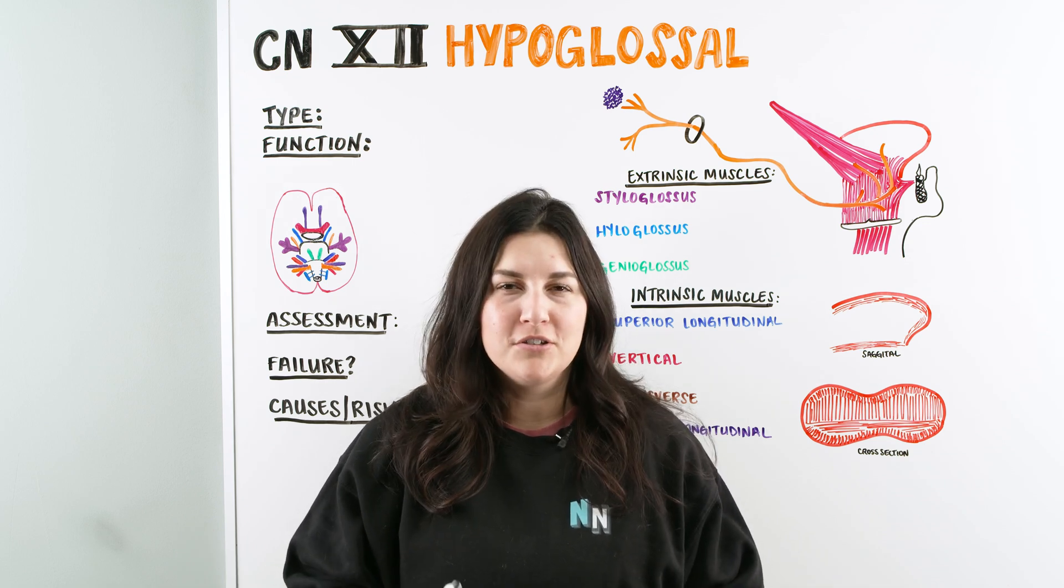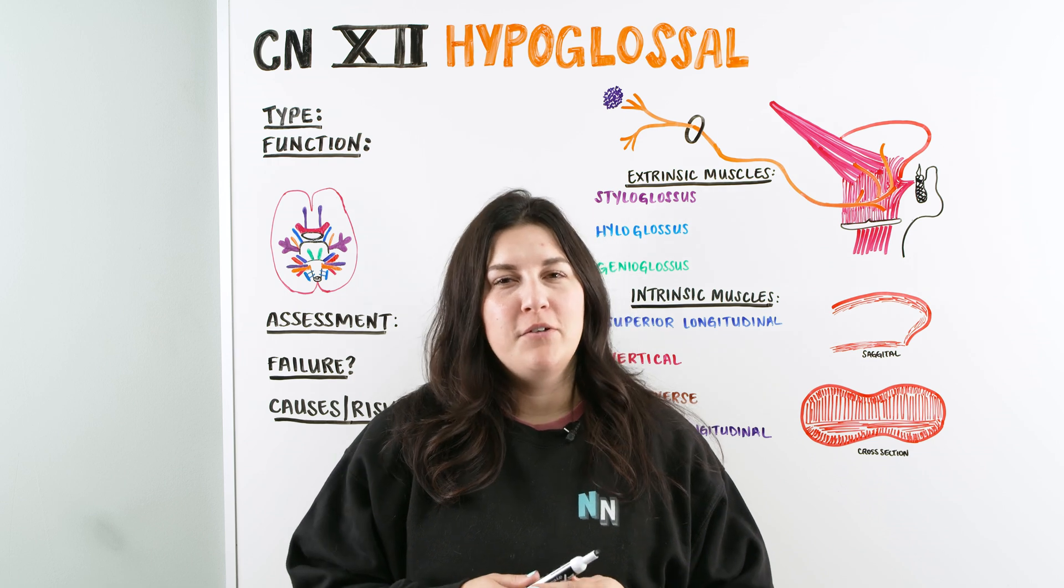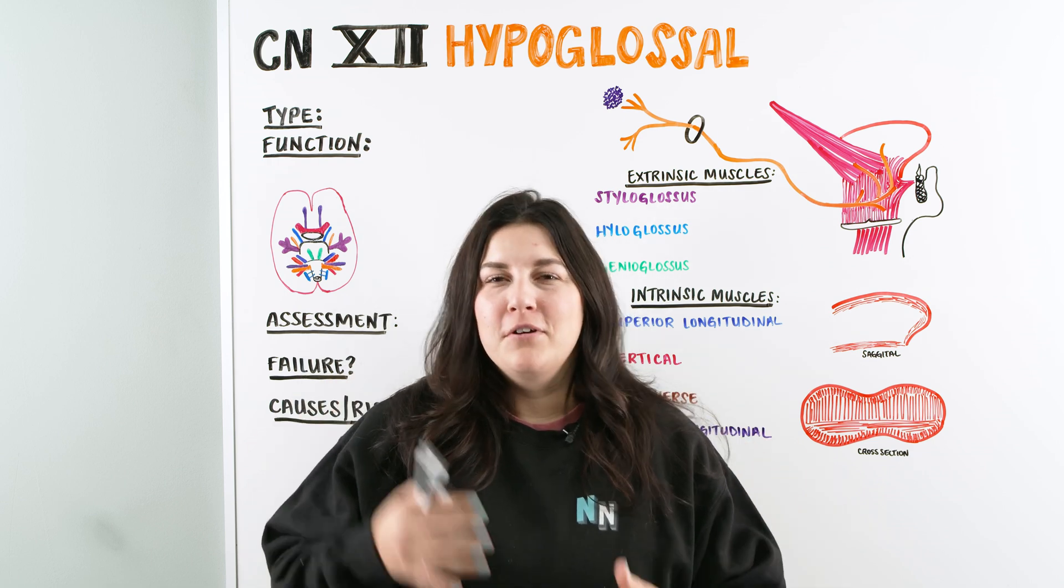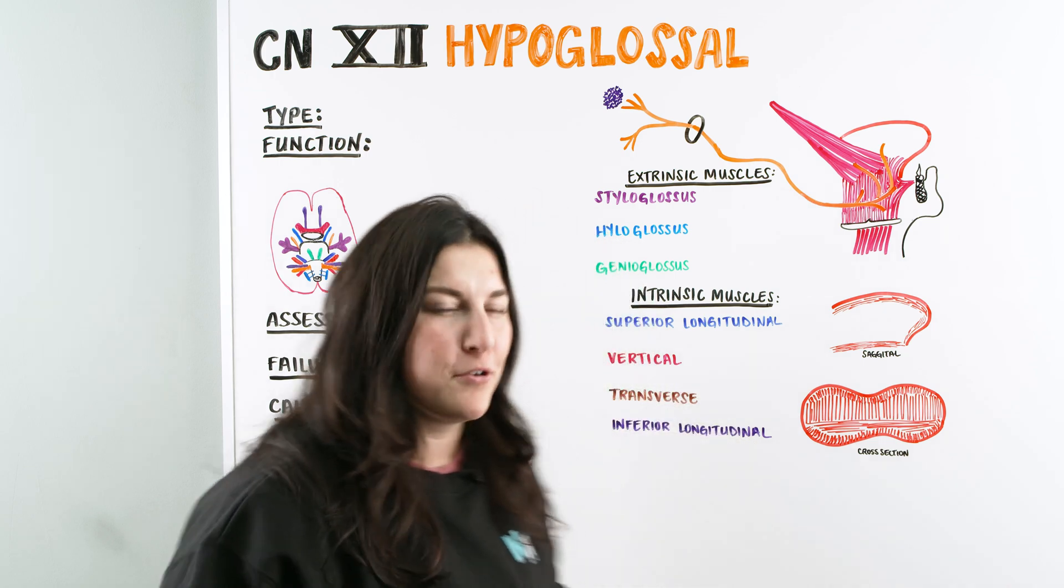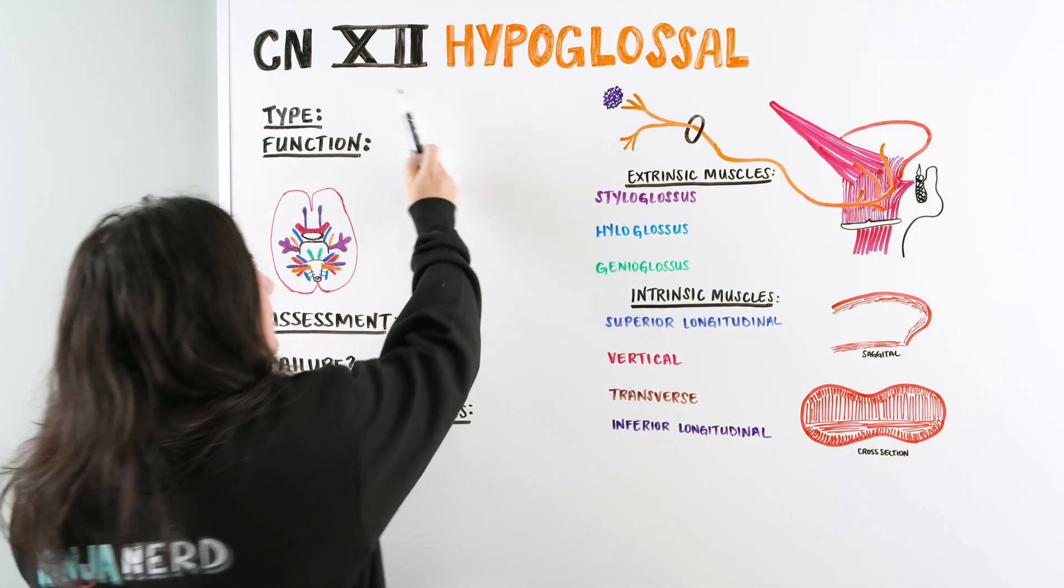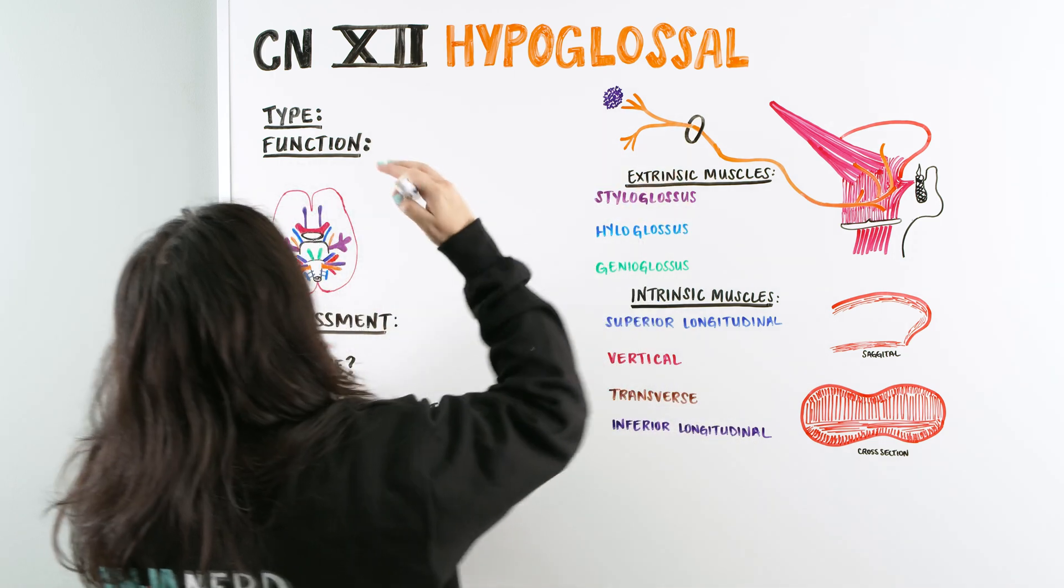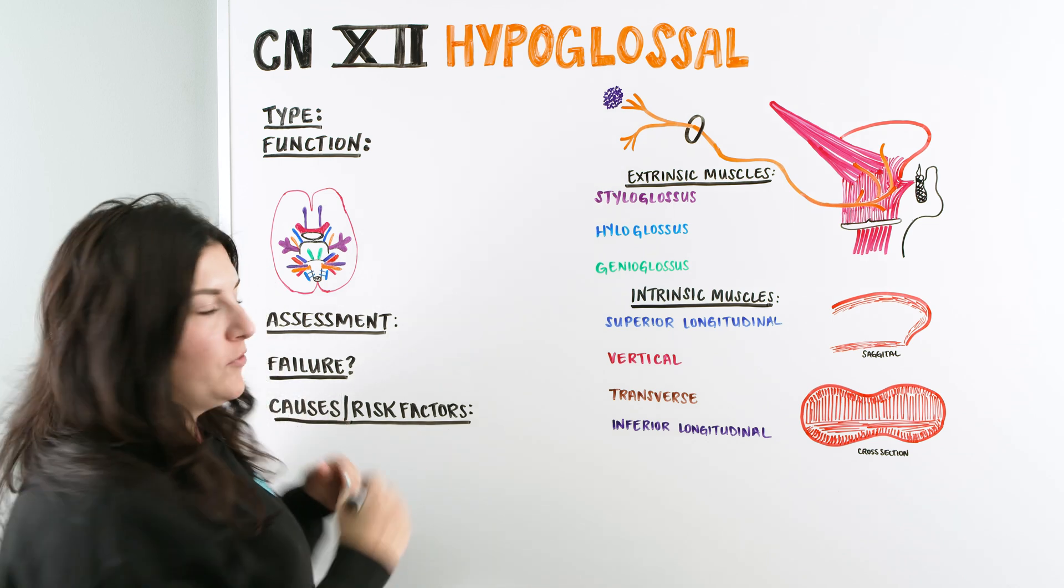All of our notes and illustrations are available for you guys to utilize. And if you want some other buddies to study with or topics to talk about, you can also check out our Discord. But now, as we wrap up the cranial nerves, we're going to be talking about number 12, hypoglossal, and what is the type. This is a motor type of nerve.